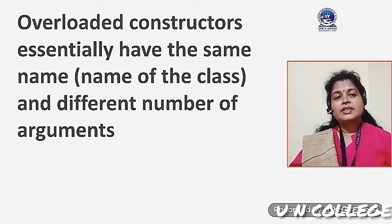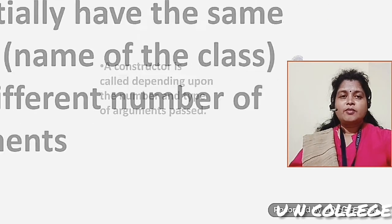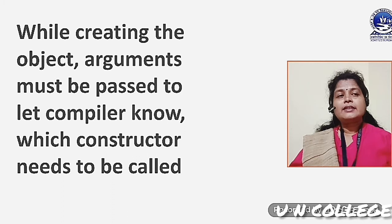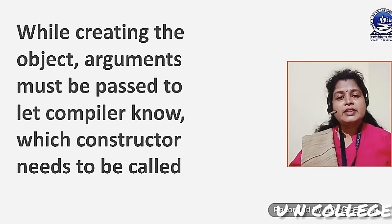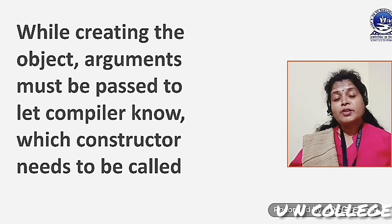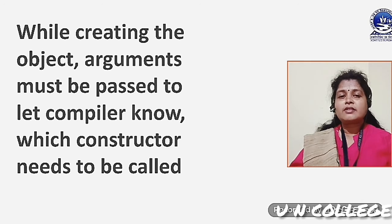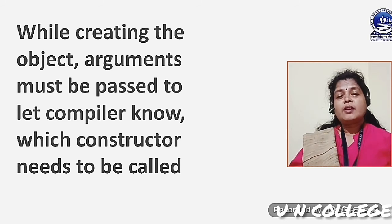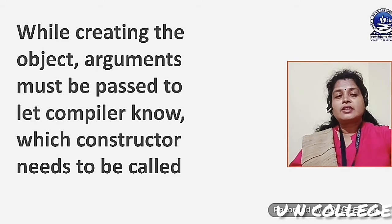Overloaded Constructors essentially have the same name — the same name as the class name — but different numbers of arguments. A Constructor is called depending on the number and type of arguments passed. While creating the object, arguments must be passed so the compiler knows which Constructor to call. On the basis of the number of arguments passed, the compiler will know which Constructor needs to be executed.